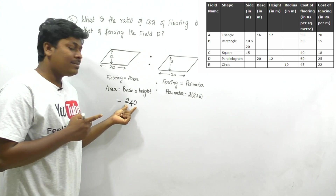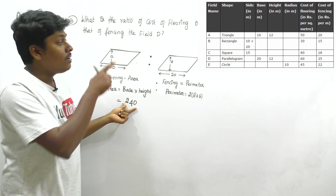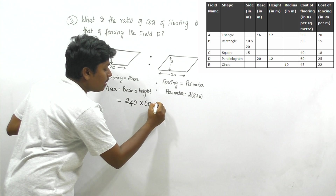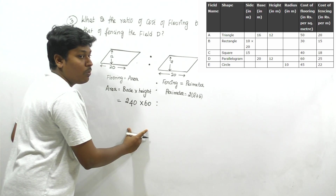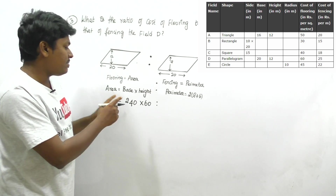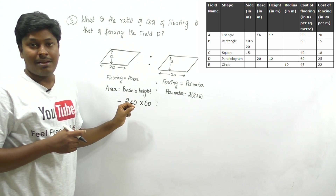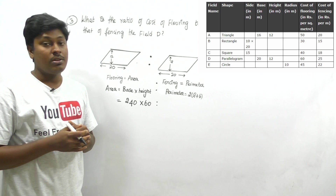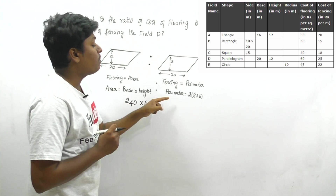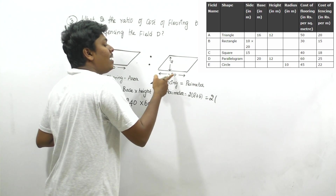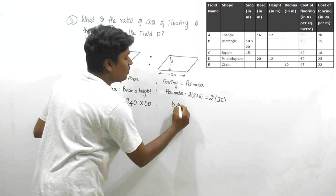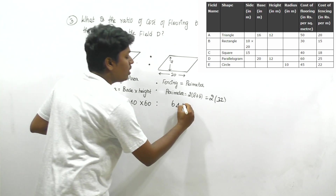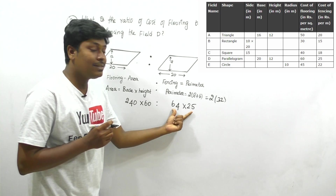Area of parallelogram = 20 × 12 = 240 square meters. Flooring cost = 240 × 60 rupees per meter. For perimeter: 2 × (20 + 12) = 2 × 32 = 64 meters. Fencing cost = 64 × 25 rupees per meter. Keep both values as-is for cancellation.